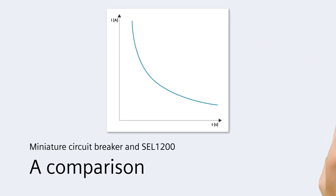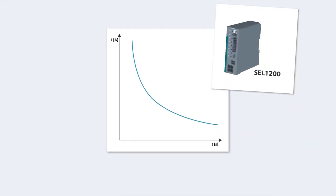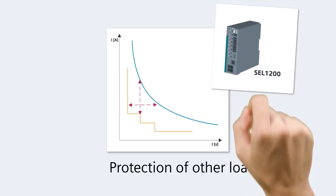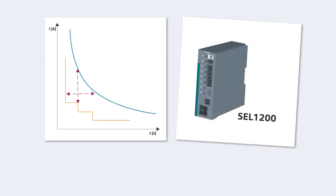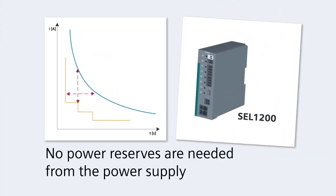Let's take a look at the SEL1200. As you can see, when a fault occurs, the SEL1200 trips much sooner. It also responds to a much lower current, meaning that the other loads are much less affected and the voltage dip is minimized. And because the switching characteristic of the SEL1200 means it is optimally adapted to the switched-mode power supply, no additional power reserves are needed.